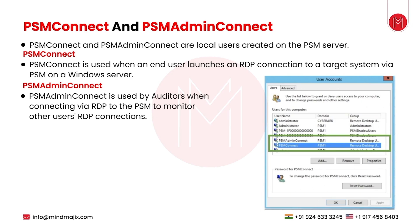You see this user 'PSM-1F00000' — this is the shadow user. Side by side, your name will be written here. For example, to identify which shadow user belongs to which identity: for me it will be written as 'VK', for you it will be written as 'Ravi'. That way you can understand which shadow user belongs to you.